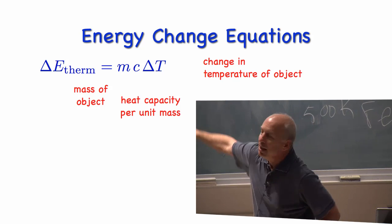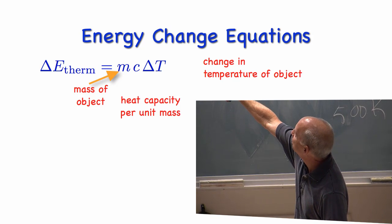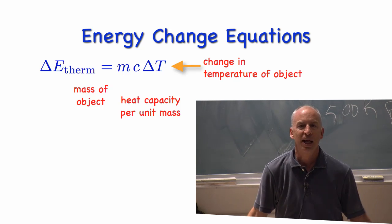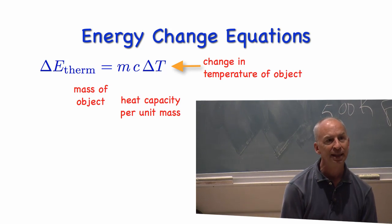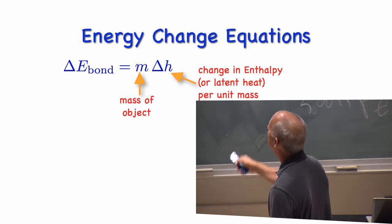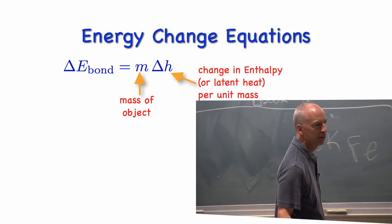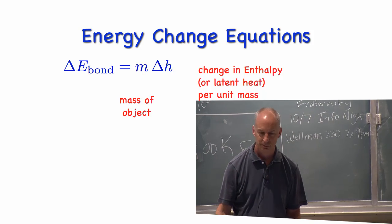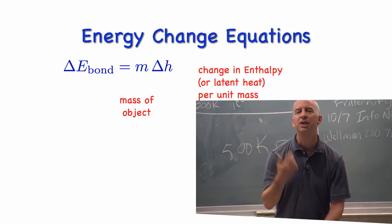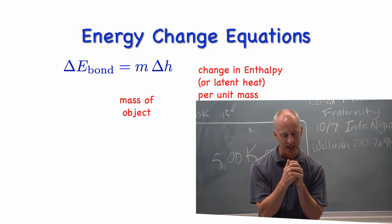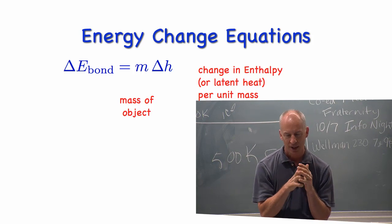Changes in thermal energy. If the mass of the object is twice as big and the thermal energy change is the same, then the temperature change has to be half as much. That's what this thing tells you. Similar kinds of issues with chemical bond changes. So, you're going to use these equations. I'll post them. You'll use them. You probably recognize some of them. You'll use them this week.